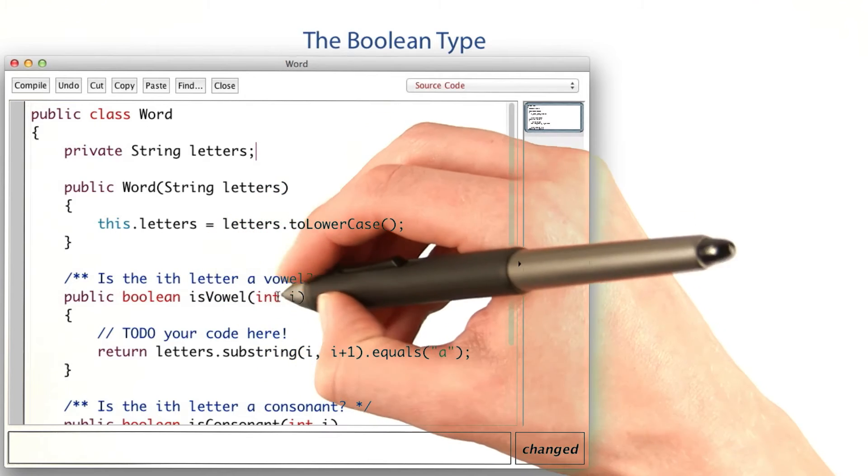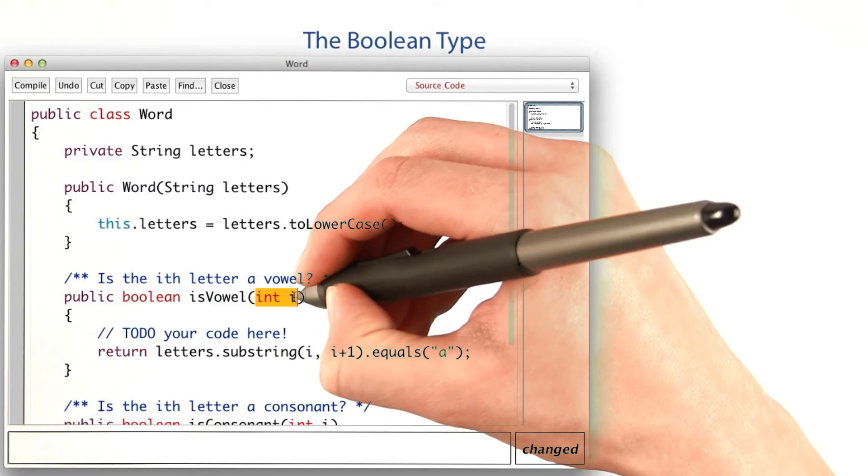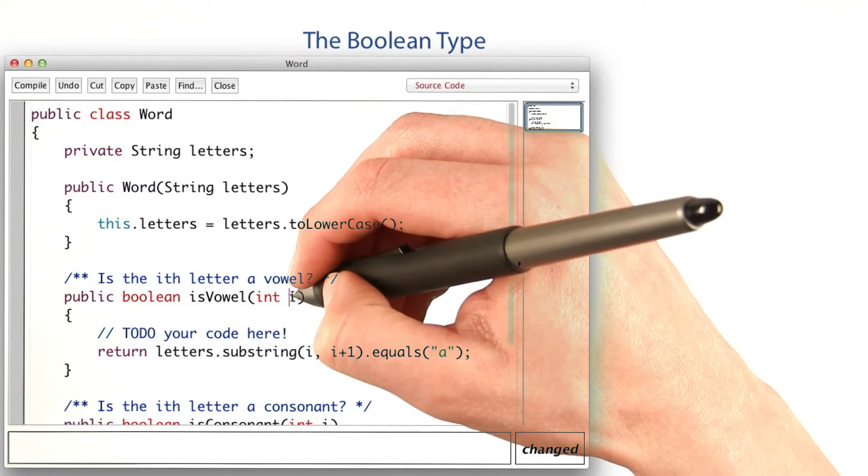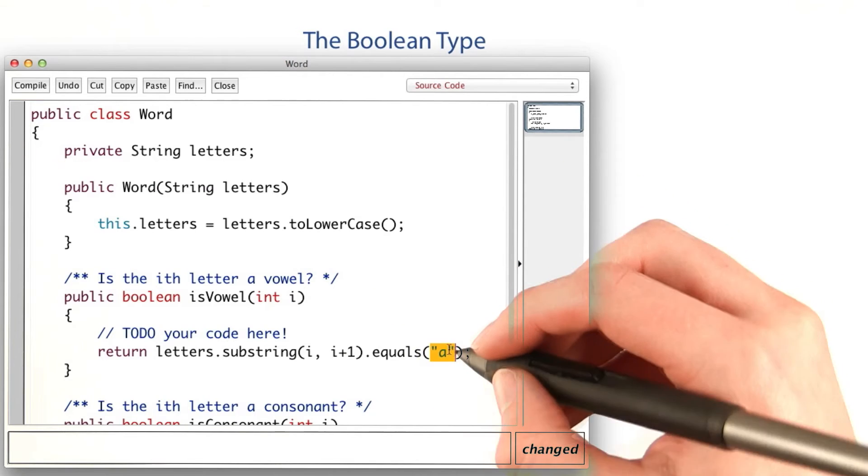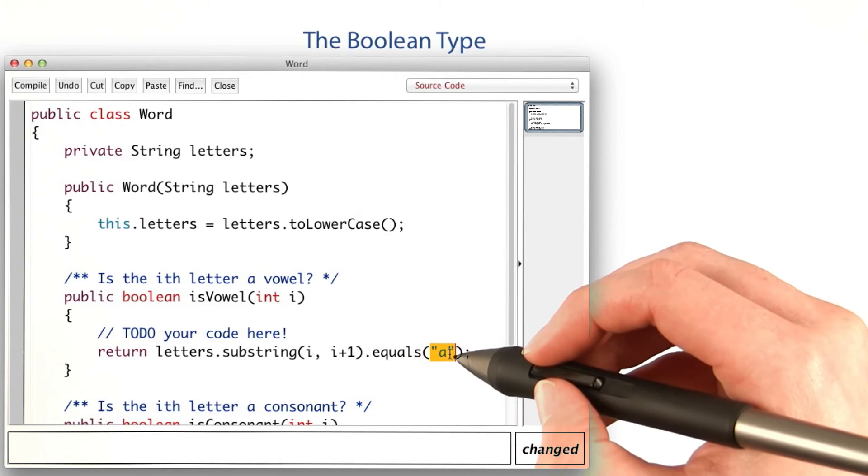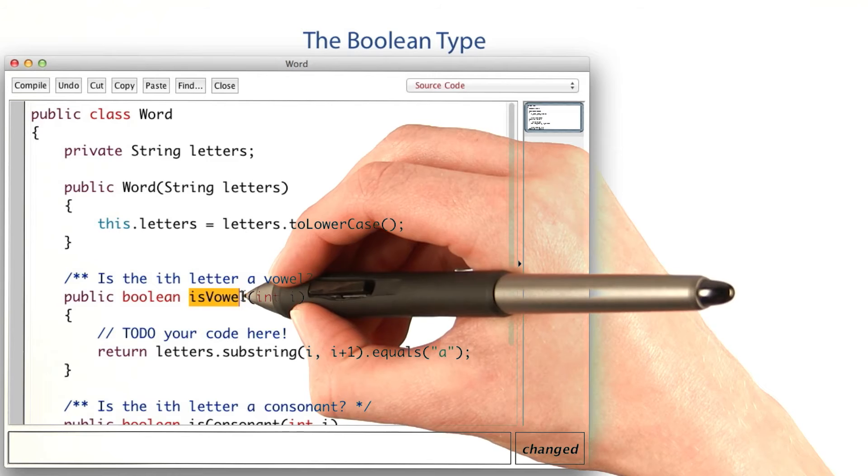The isVowel method takes in an index and then checks to see if the letter at that index is an A. You've probably noticed that this method implementation doesn't really match the description of the method.